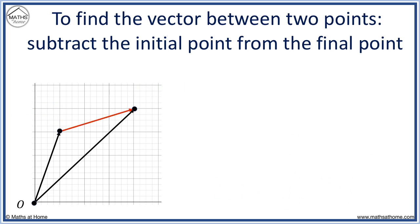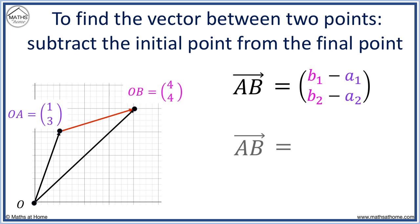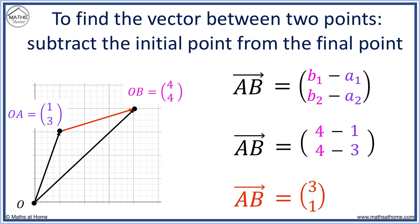For example, here OA has vector 1, 3 and OB has vector 4, 4. We have 4 minus 1 and 4 minus 3. 4 minus 1 equals 3 and 4 minus 3 equals 1. The vector from A to B is 3, 1.